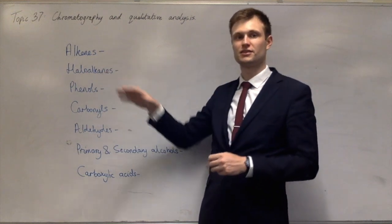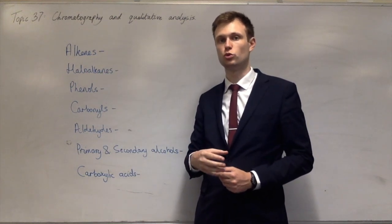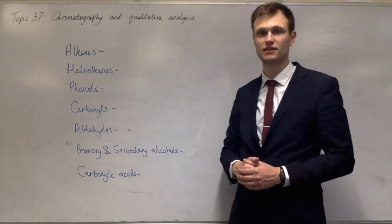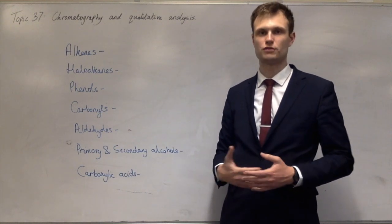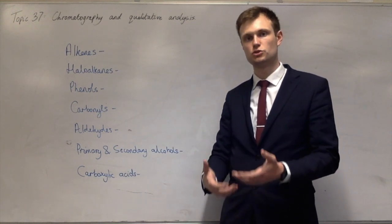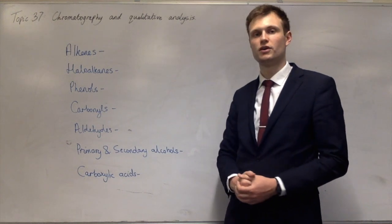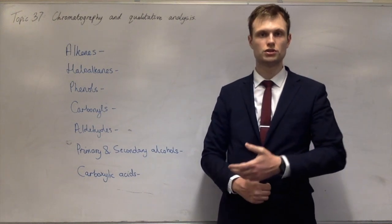Alkenes — this is a GCSE one. You add bromine water and it decolorizes if it's an alkene. We now know the reason why: it's electrophilic addition of bromine to the double bond, but that decolorizes bromine water from orange.